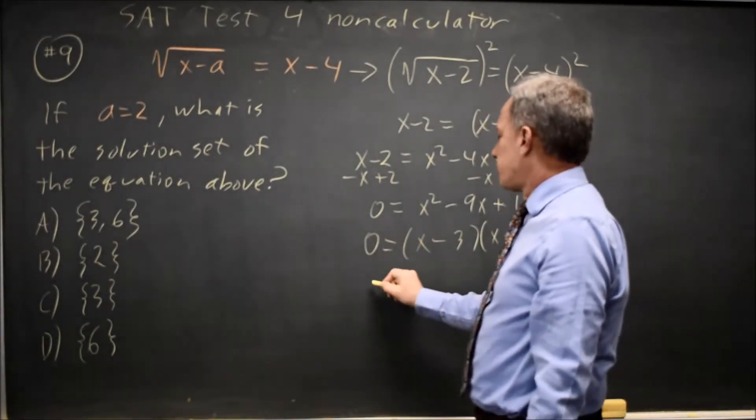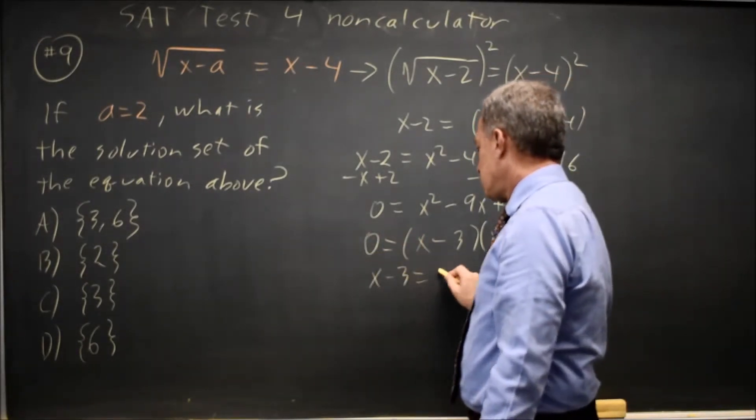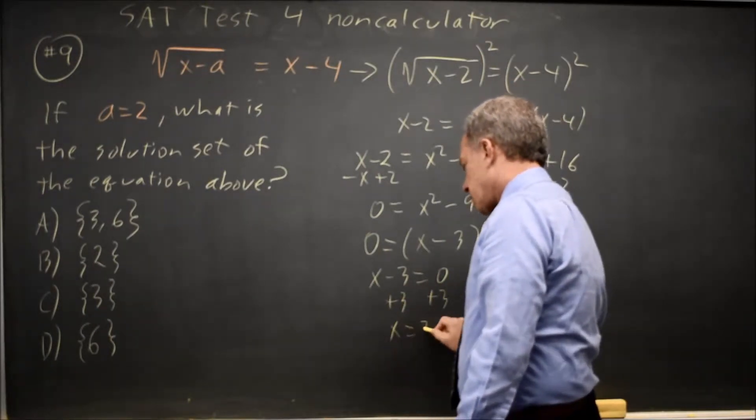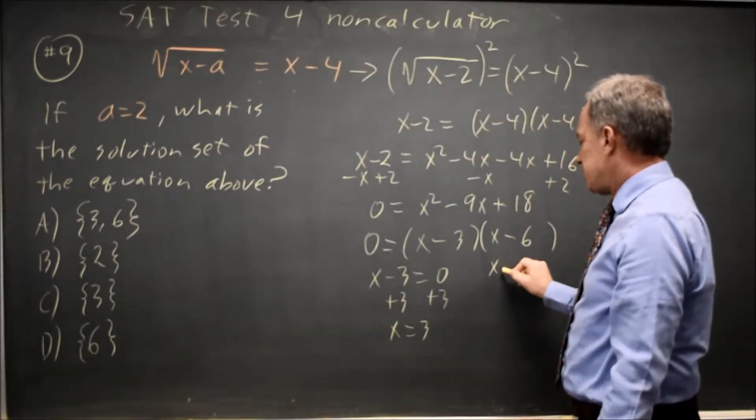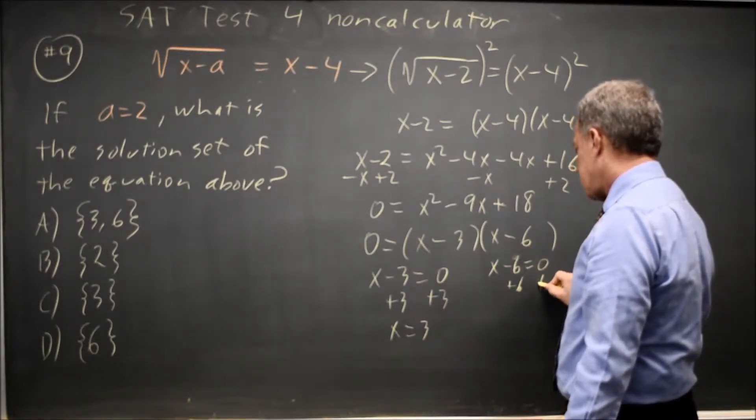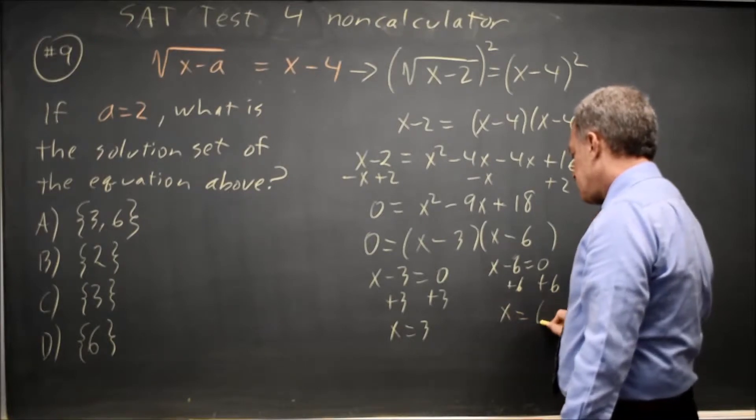If a product is 0, either the first factor is 0, add 3 to both sides, so x equals 3, or the second factor is 0, add 6 to both sides, x equals 6.